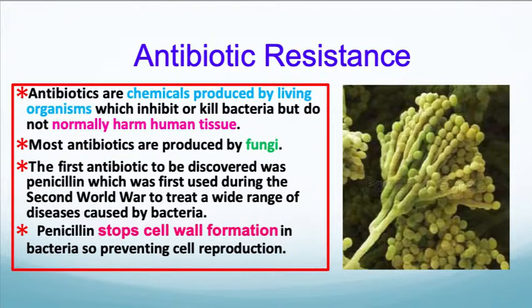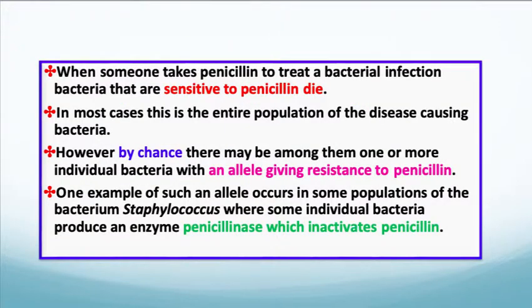Antibiotics are chemicals produced by living organisms which inhibit or kill bacteria but do not normally harm human tissue. Most antibiotics are produced by fungi. The first antibiotic to be discovered was penicillin, first used during the Second World War to treat a range of bacterial diseases. Penicillin stops cell wall formation in bacteria, preventing cell reproduction. When someone takes penicillin to treat a bacterial infection, bacteria that are sensitive to it will die. However, by chance, there may be individual bacteria with an allele giving them resistance to penicillin — this allele would have arisen randomly by mutation. One example occurs in some populations of the bacterium causing staph infection, where some individual bacteria produce an enzyme, penicillinase, which inactivates the penicillin.